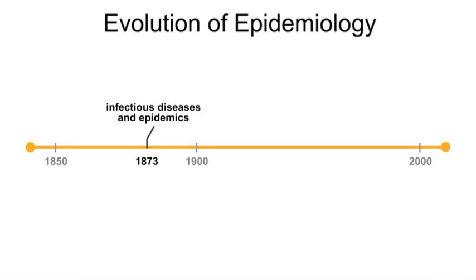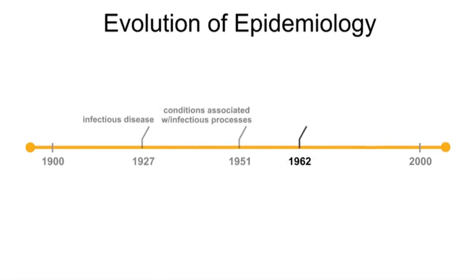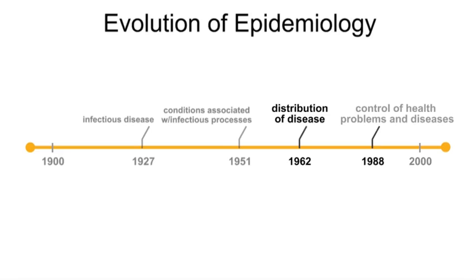The focus was just on infectious diseases and epidemics in the mid-1800s. Epidemiology began to focus on infectious disease overall in the mid-1900s. By the mid-1950s, epidemiology's focus then included not just infectious diseases, but specific conditions associated with them. In the 1960s, epidemiology began to focus on laws regarding the distribution of disease at a community level. Then, in the late 1980s, epidemiology focused on how to control or minimize health problems and diseases.